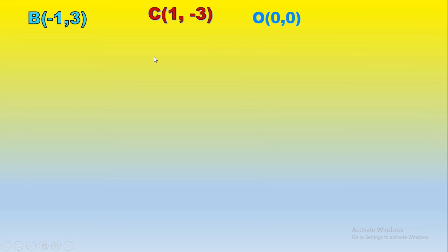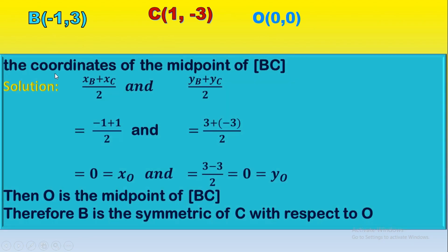How to prove that O is the midpoint of BC? It's enough to find the coordinates of the midpoint of segment BC and show they are the same as the coordinates of O. We compute (XB + XC) / 2, which is (-1 + 1) / 2 = 0 / 2 = 0. Isn't that equal to XO?